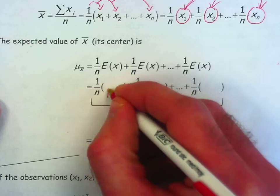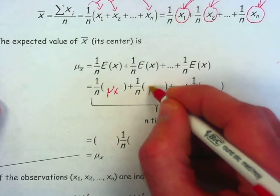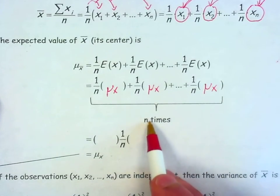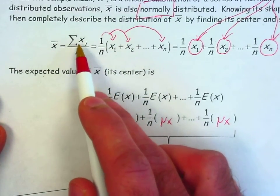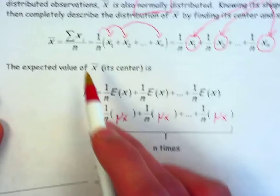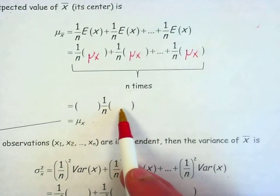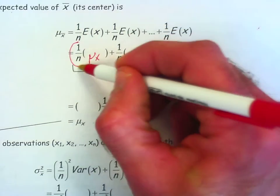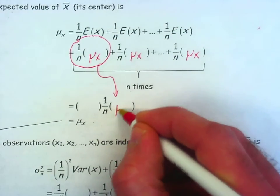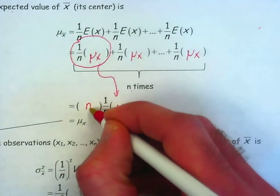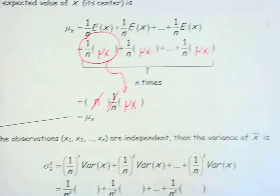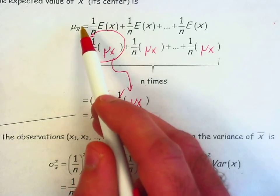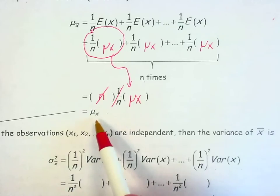That expected value is mu x for all of them. There are n observations here — the sample mean is made of n independent x's, which is why I'm dividing by n. There are n of these terms, so instead of writing it n times, I can write it once: 1 over n times mu of x. But there are n of them, so I multiply by n, and the n and 1 over n cancel, giving me just mu of x.